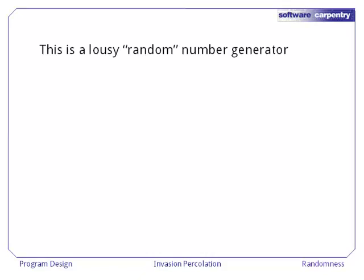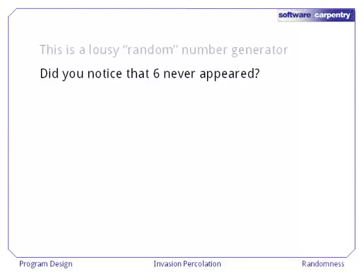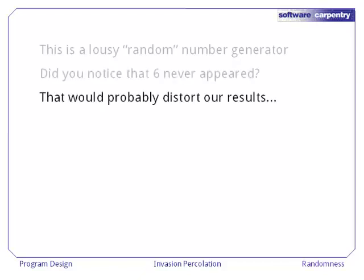Now, this code is actually a really lousy random number generator. For example, did you notice that the number six never appeared anywhere in the sequence? That would probably distort our results. It would introduce a bias into our statistics that might be very hard to detect.